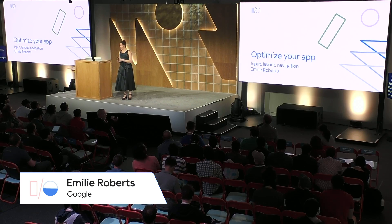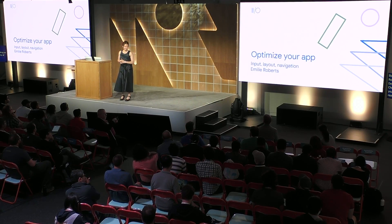Thanks, Stefan. I'm Emily Roberts, a developer advocate working on Chrome OS. We've learned a lot about where Chrome OS is and the new tools and features we've brought this year. I want to talk about what you can do to optimize your app — to make your apps look awesome and work really awesome on Chrome OS. I'm going to talk about input, output, and a surprise topic in the middle.